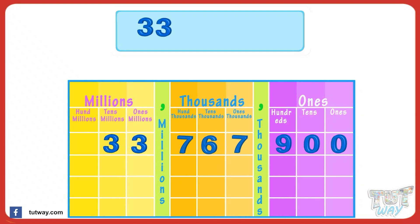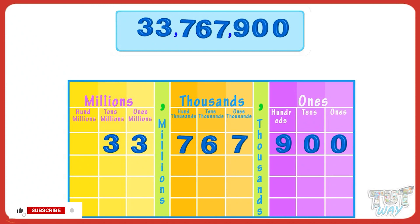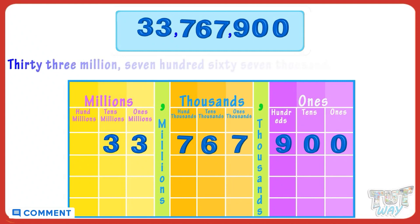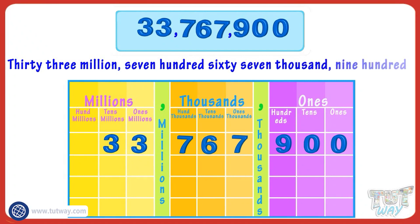You have to read the numbers separately from all periods. Three three are in the millions period, so read it as thirty three million and place a comma. The next three digits are in the thousands period, so read it as seven hundred sixty seven thousand and place a comma. The next three digits are in the ones period: nine hundred. So our number is written and read as thirty three million seven hundred sixty seven thousand nine hundred.